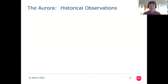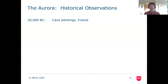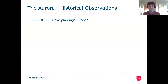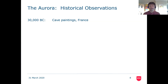Let's begin with a few historical observations of the Northern Lights. The earliest observation we've got, which we think might be the Northern Lights, is from 30,000 BC — cave paintings in France. These paintings are a little bit difficult to interpret and it's difficult to establish exactly when they were painted, but we think there's a cave painting from about 30,000 BC that seems to show the Northern Lights in France.